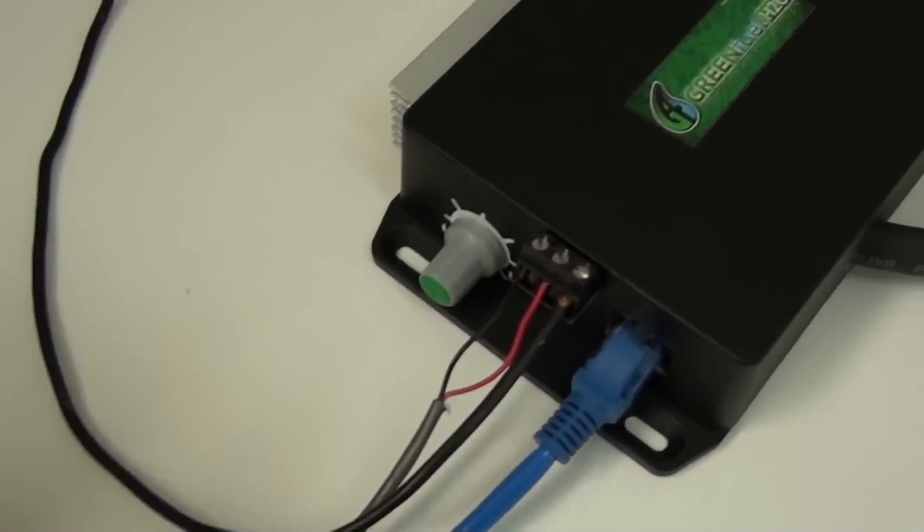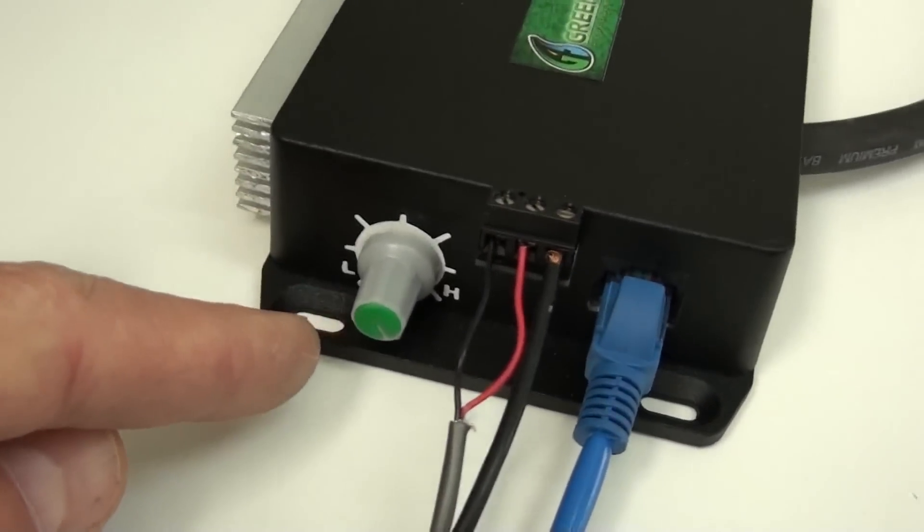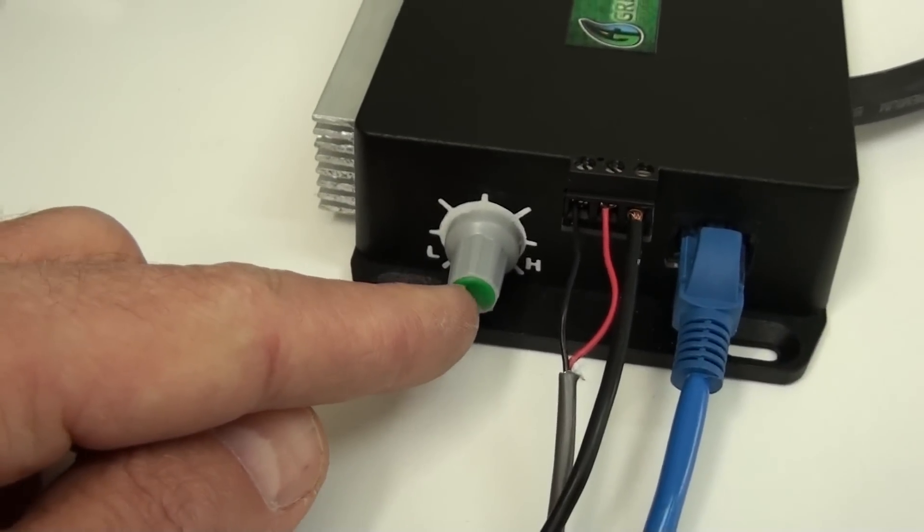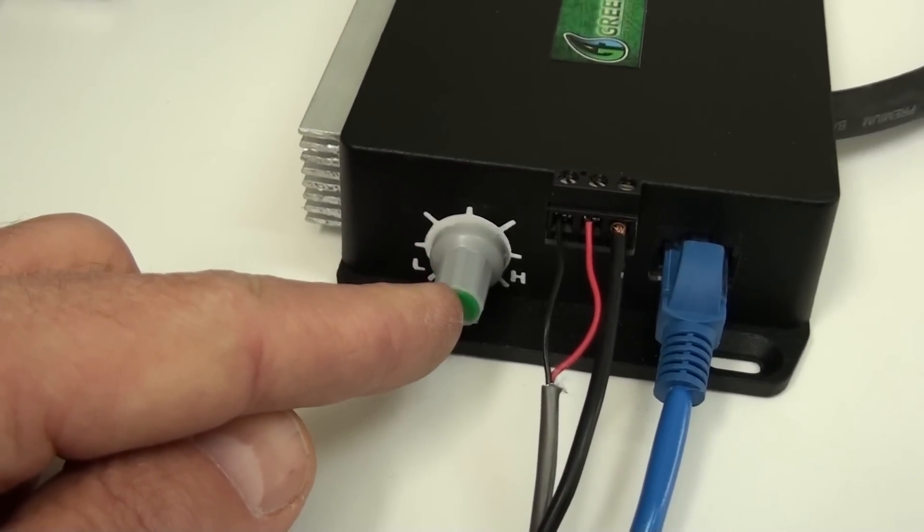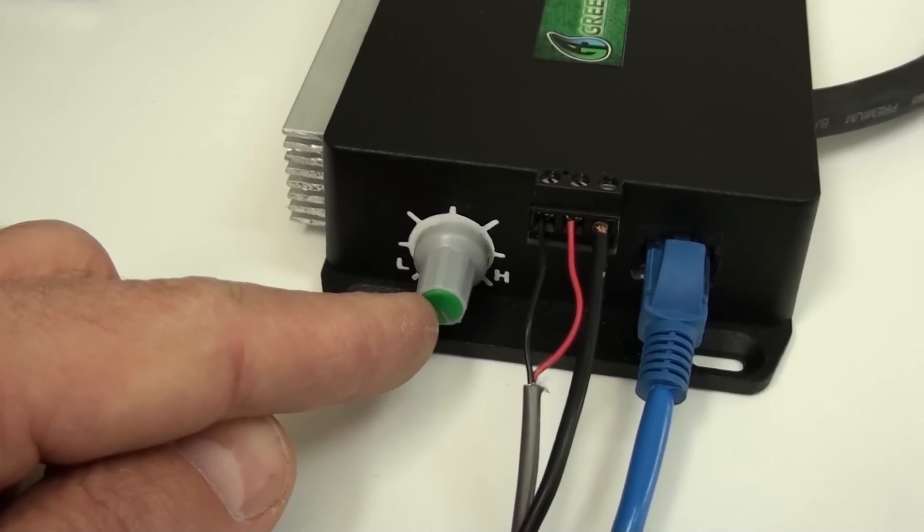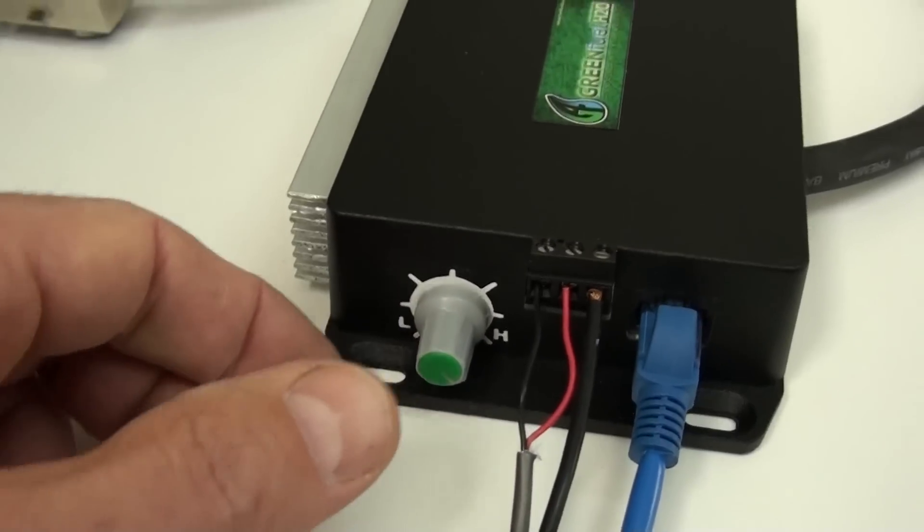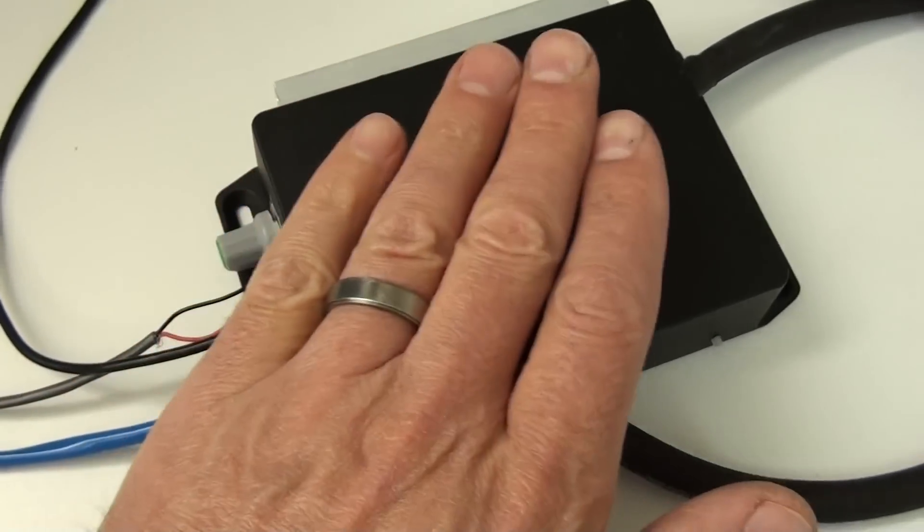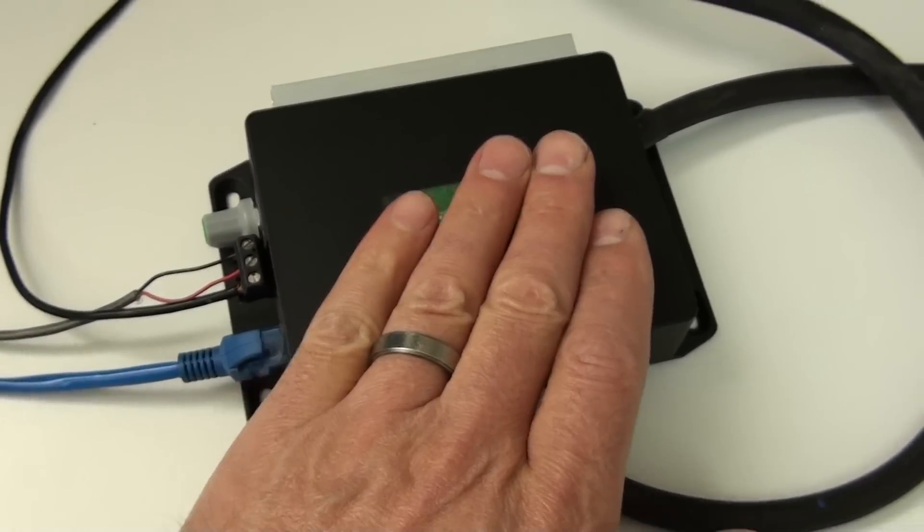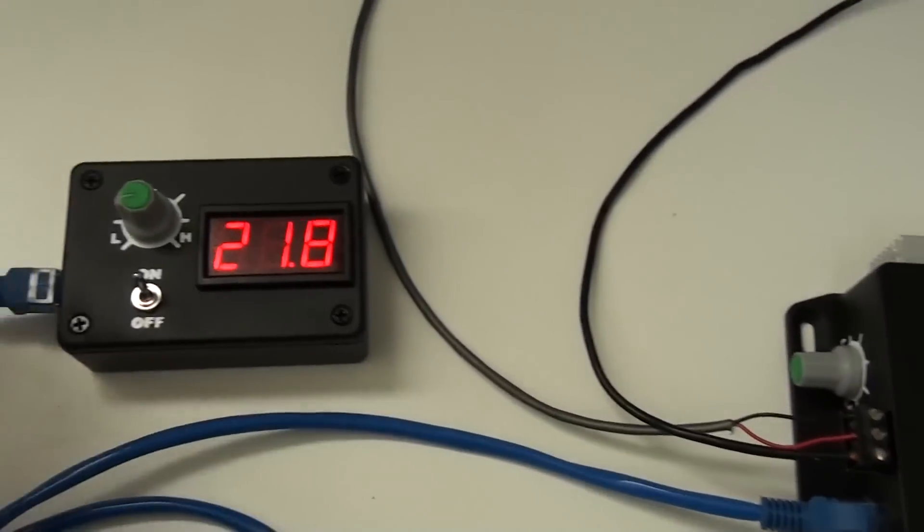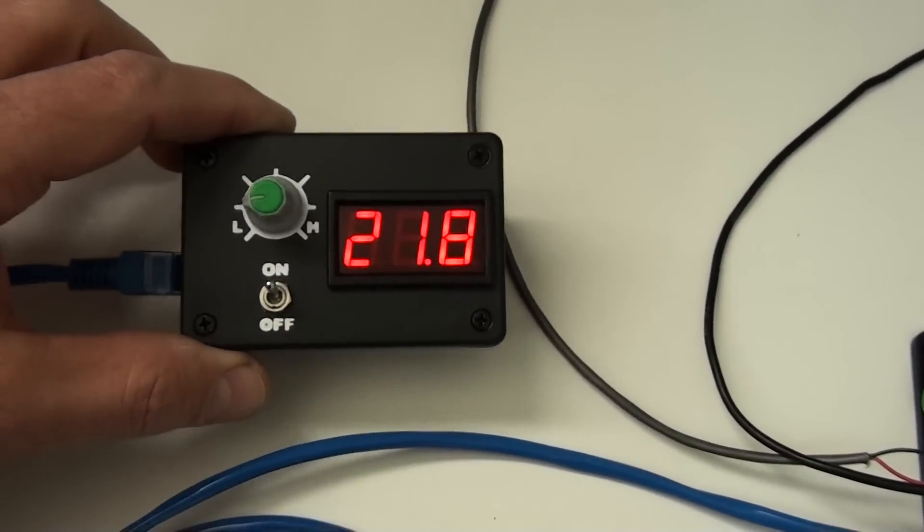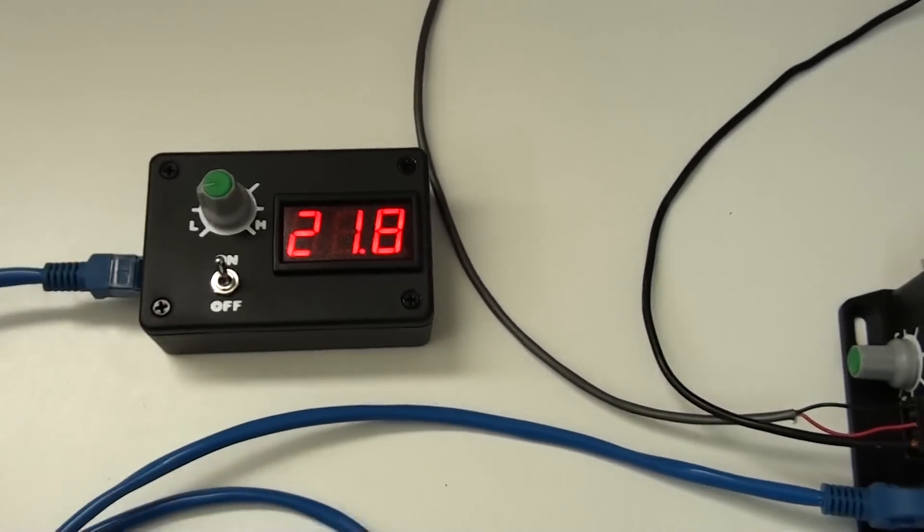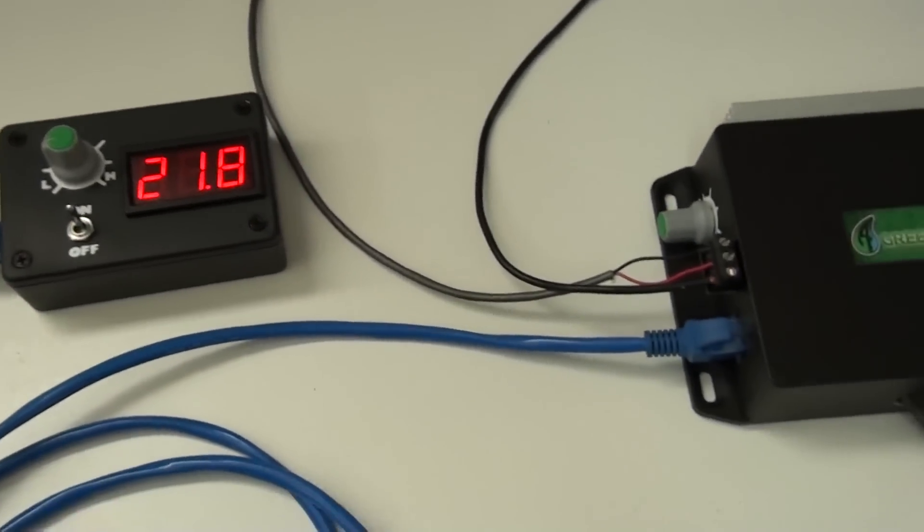Right here there's a knob and this knob you turn to increase the amperage going to the cell. That knob there will control this power module by itself. The screen here is an option. It's optional. You don't have to use the screen but it makes it nice.